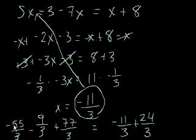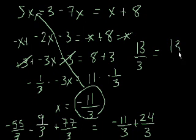Let's add this up. Minus 55 minus 9, that's minus 64, if I'm right, yeah, that's minus 64, and then plus 77, minus 64 plus 77 is 13. So the left-hand side becomes 13 over 3. And then the right-hand side, minus 11 plus 24, well that's 13, and we still have over 3. So, looks like we got the right solution. It checks out.